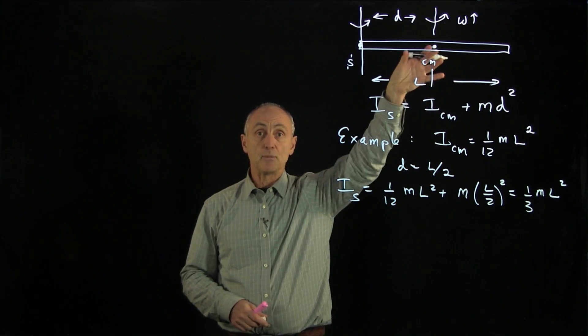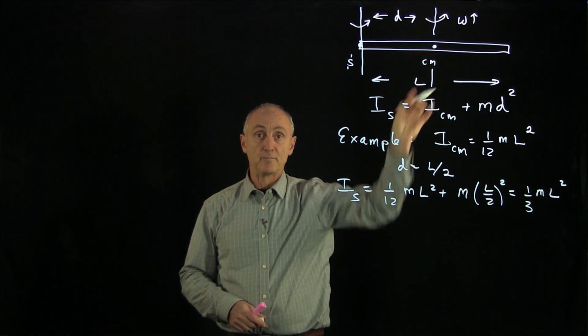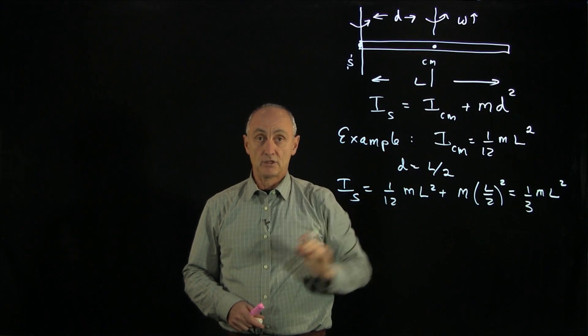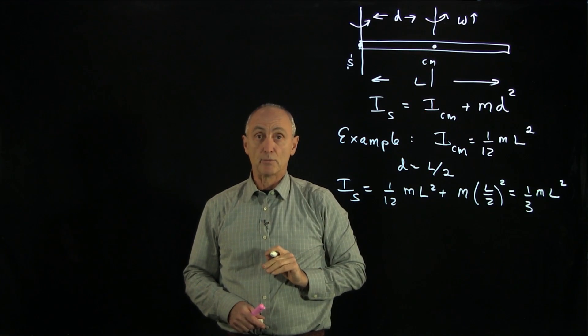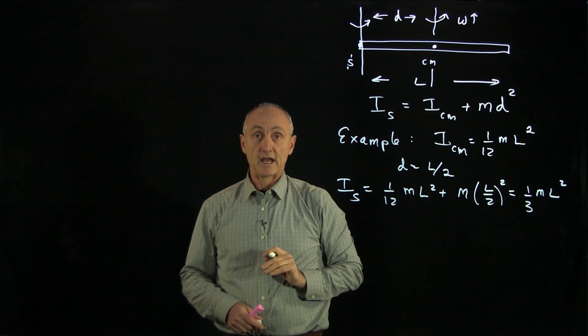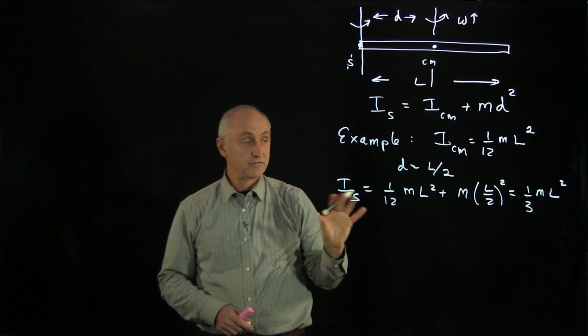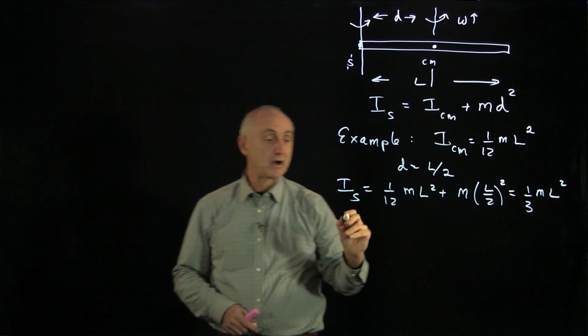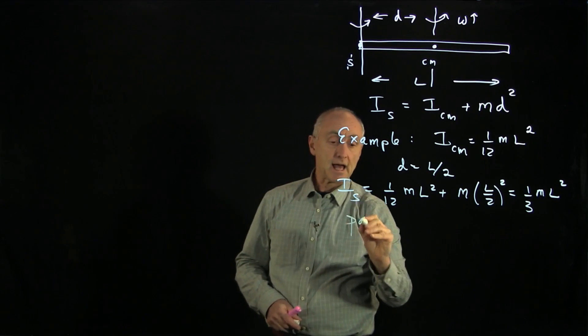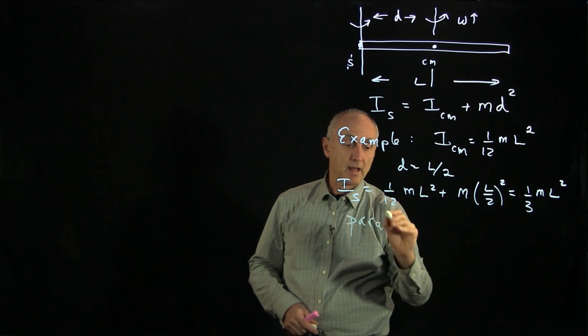And 1/12 plus 1/4 is 1/3, giving (1/3) m L². That means all you need to know is the moment through the center of mass, and you can calculate the moment through any other axis. This is a very useful theorem called the parallel axis theorem.